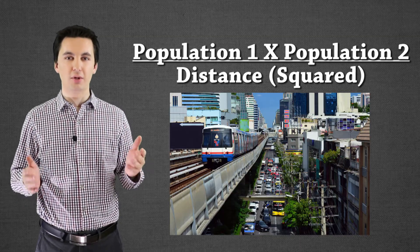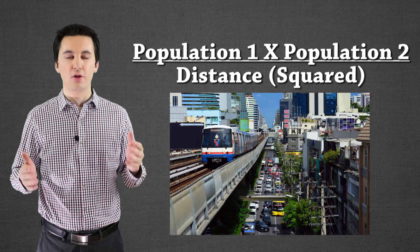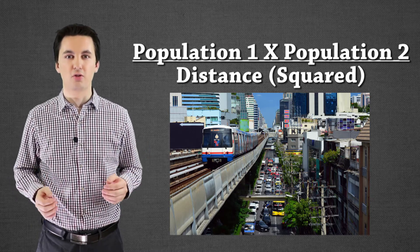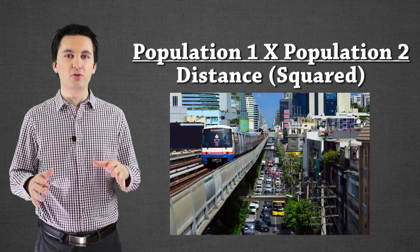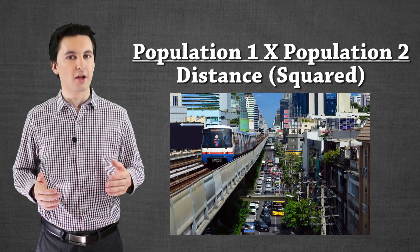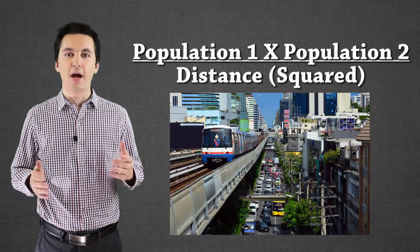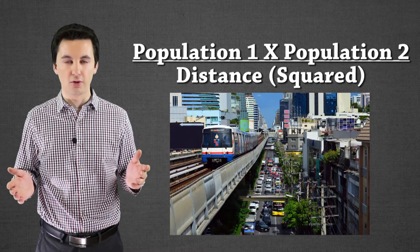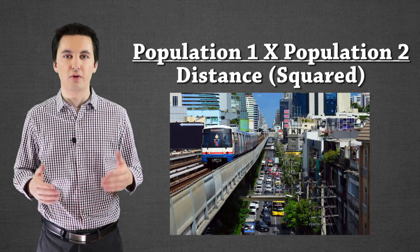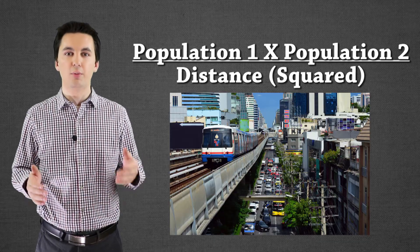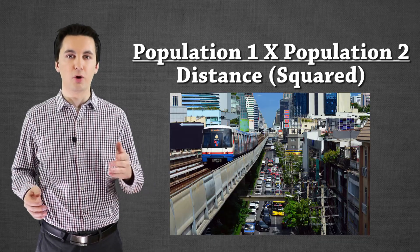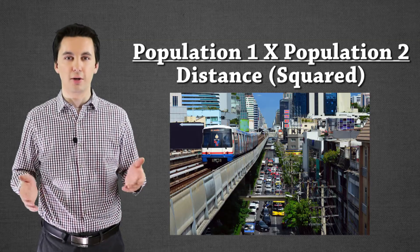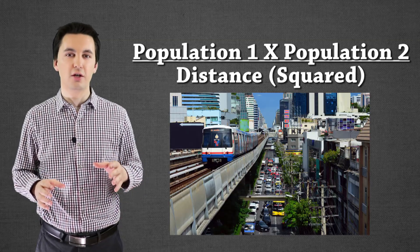The larger the population of the two cities, the more they will interact, and the closer they are, the more they'll interact as well. That doesn't mean that two cities far apart won't interact — very large cities located around the world have a higher percentage chance of interacting, because when people move they normally go to areas with opportunities, and those happen in larger cities.